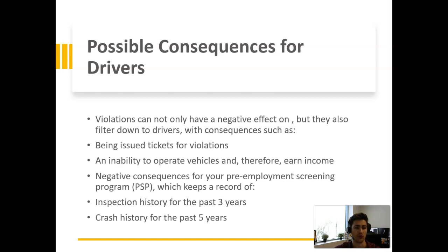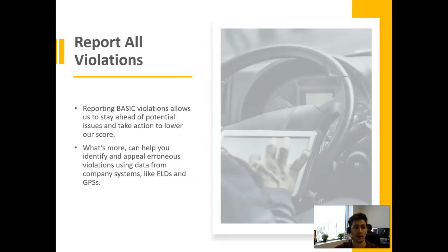Possible consequences for drivers — violations not only have a negative effect on the carrier, but they also filter down to the drivers. Consequences include being issued tickets for violations, inability to operate vehicles and therefore earn income, and negative consequences for your pre-employment screening, which keeps a record of your inspection history for three years and your crash history for five years. Also, report all violations — reporting Basic violations allows us to stay ahead of potential issues and take action to lower your score. It can also help you identify and appeal erroneous violations using data from company systems such as ELDs and GPS.